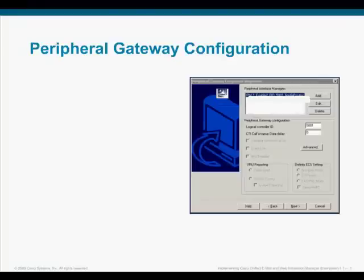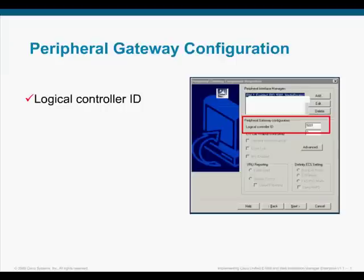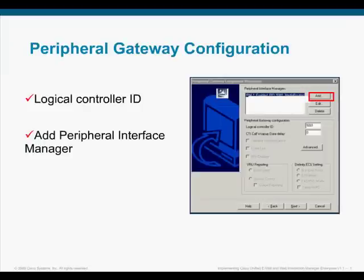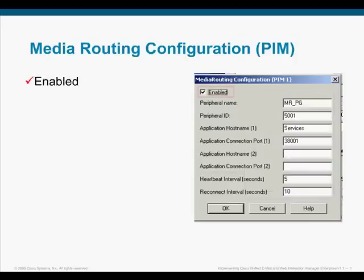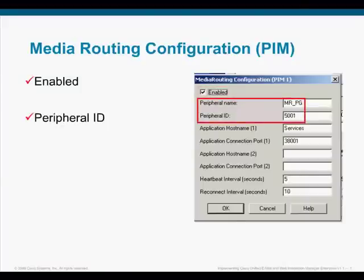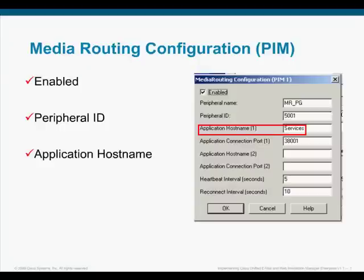For the client type selection, select Media Routing. Now we'll take a look at the Peripheral Gateway Configuration. Under the Peripheral Gateway Configuration, enter the value for the Logical Controller ID. This was the system-generated controller ID when you configured the MRPG. Underneath the Peripheral Interface Managers, select Add and then go down to the bottom and select Next so we can configure the PIM. Make sure you enable the PIM. Provide a unique peripheral name and the Peripheral ID. Again, this is the system-generated peripheral ID when you configured the MRPG in the Configuration Manager.